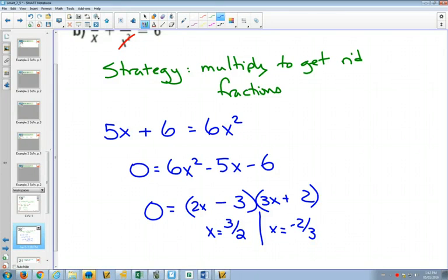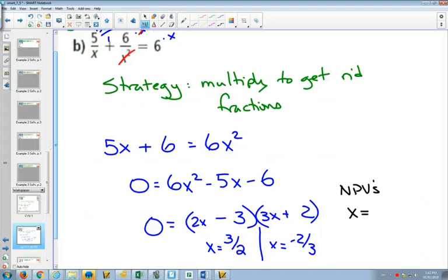We have to do a quick check to make sure none of these were non-permissible values. Looking at our original equation, we divided by x here, so x can't equal 0. Here we're dividing by x squared, so again, x can't equal 0. Our only non-permissible value is x equals 0. So both of those answers are right.